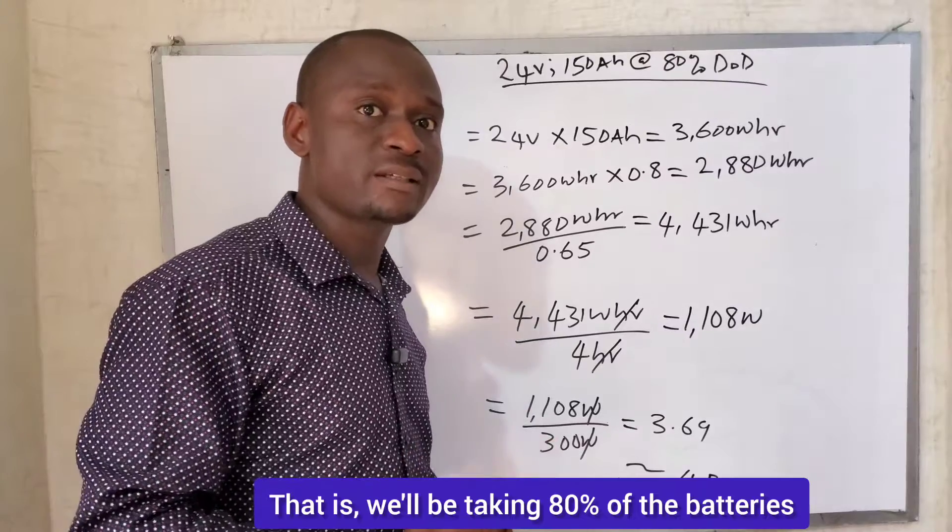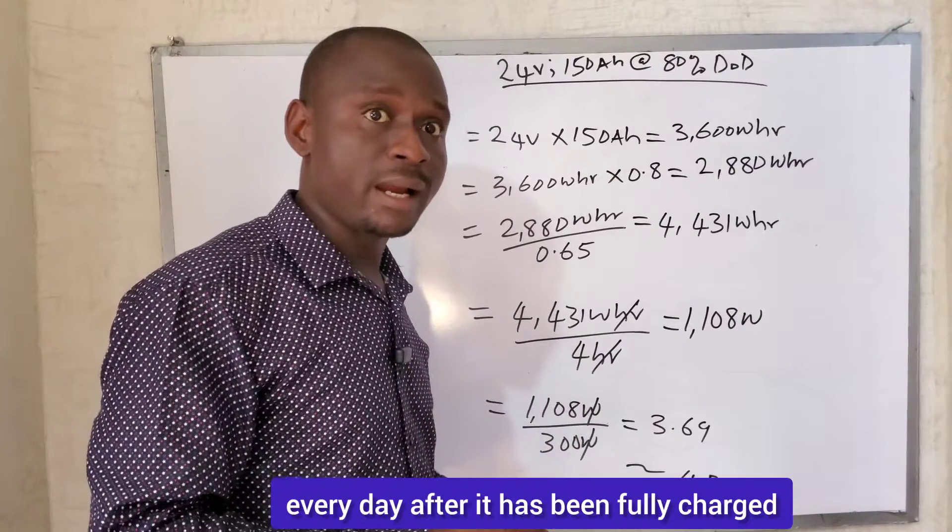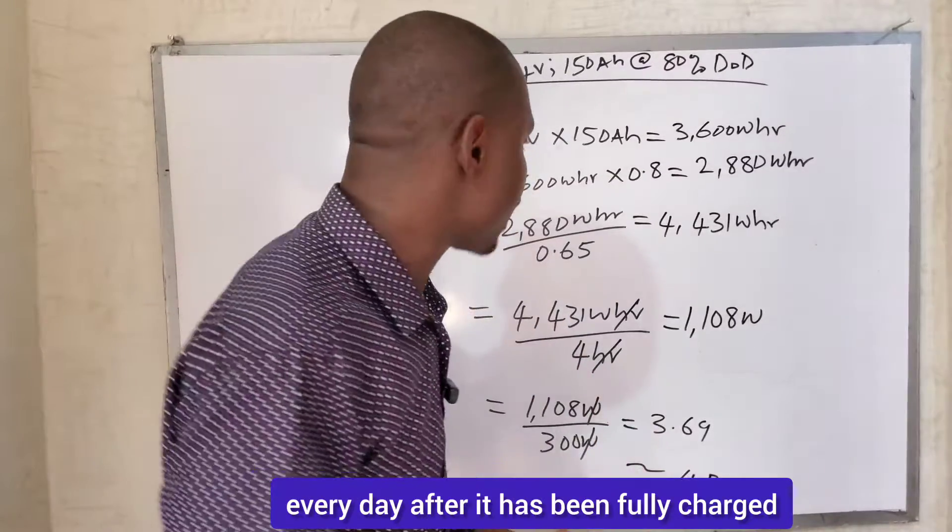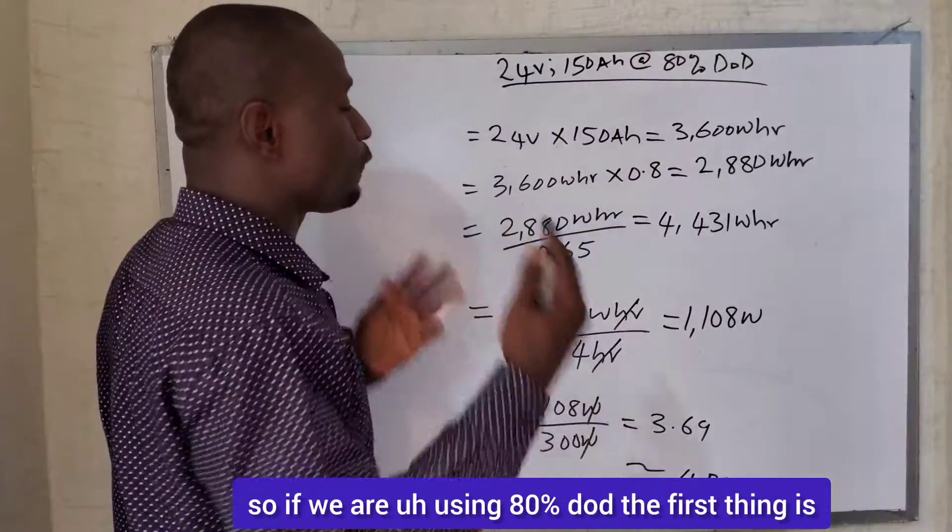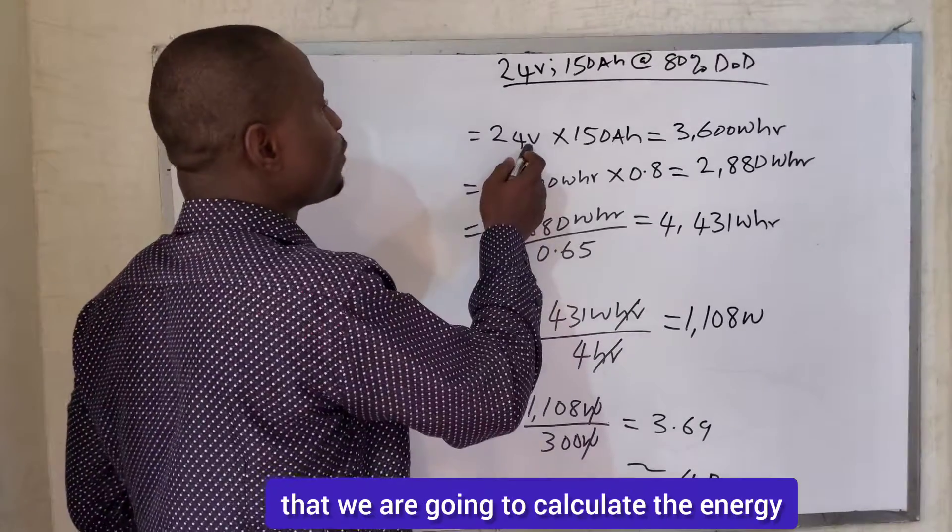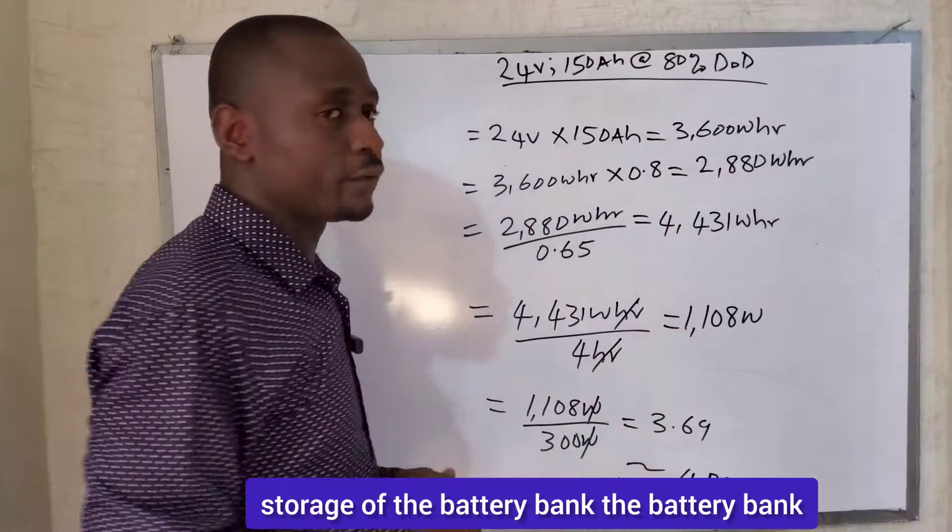That is, we'll be taking 80% of the batteries every day after it has been fully charged. So if we are using 80% DoD, the first thing is that we are going to calculate the energy storage of the battery bank.